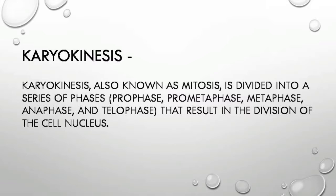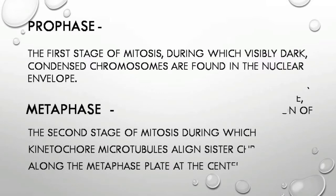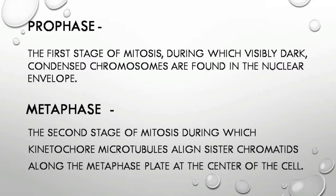Karyokinesis, also known as mitosis, is divided into a series of phases: prophase, prometaphase, metaphase, anaphase, and telophase, that result in the division of the cell nucleus. Prophase: the first stage of mitosis.